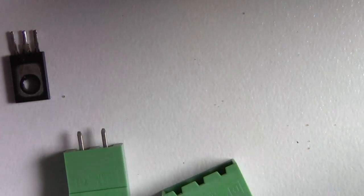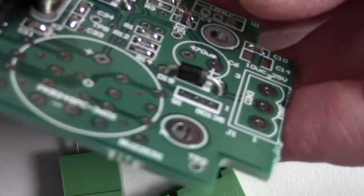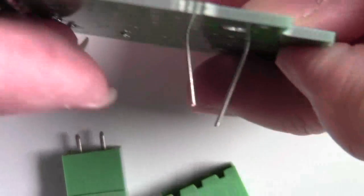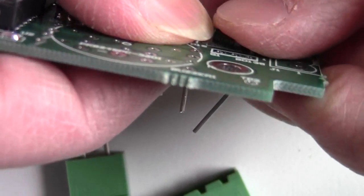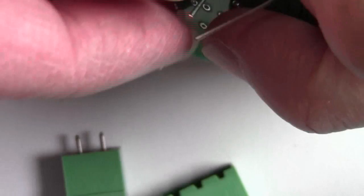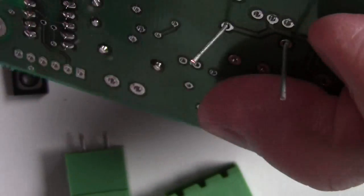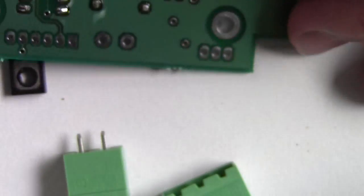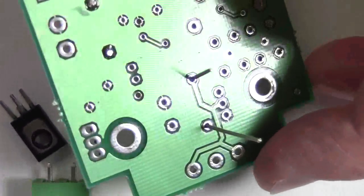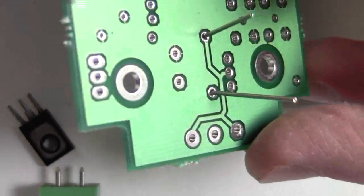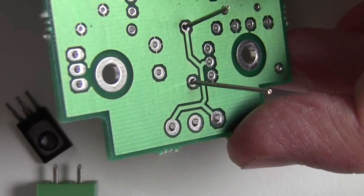Push it all the way down, like so. Make sure the part is firmly flat against the board. Then bend the leads like that so it doesn't fall out again.